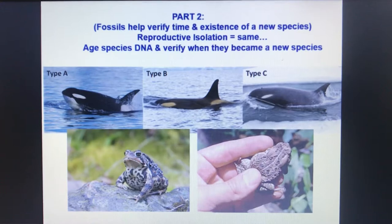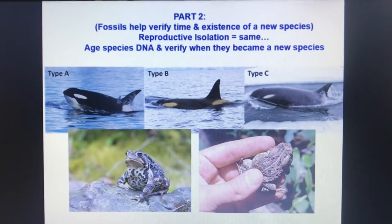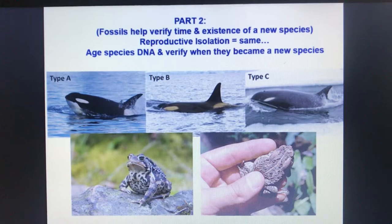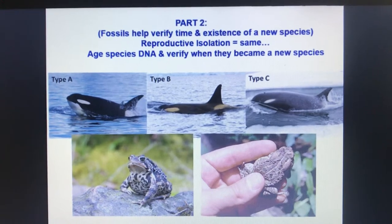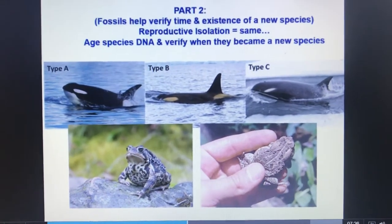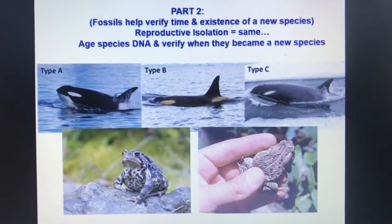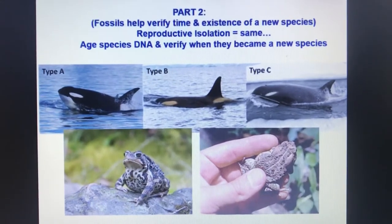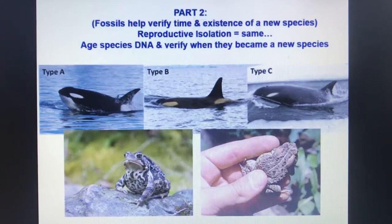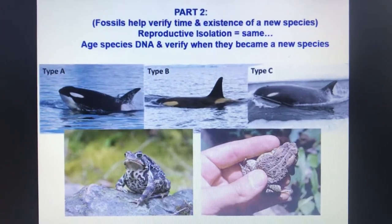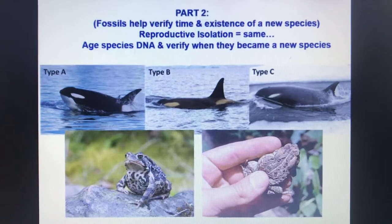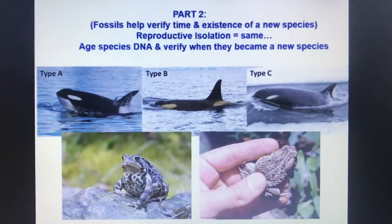Now let's talk about how fossils help verify time and the existence of a new species. However, there's another process known as reproductive isolation which does very much the same. We can age living species now through DNA analysis and actually verify if they are becoming a new species or had a common ancestor — very similar to fossils.